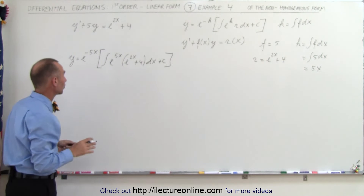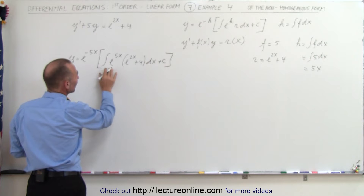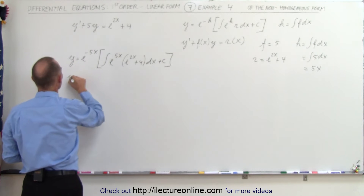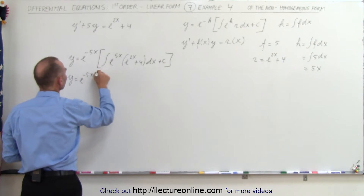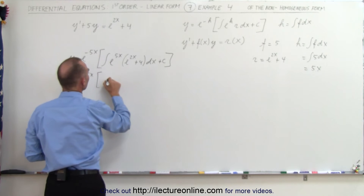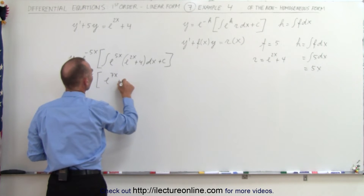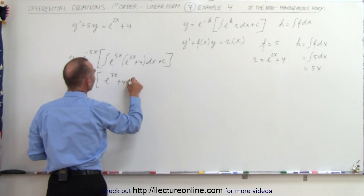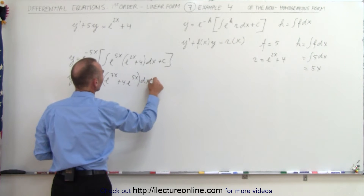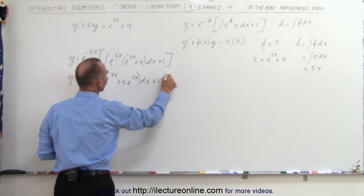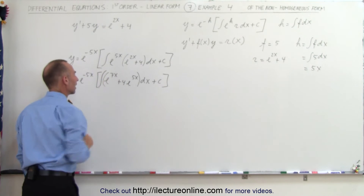Now let's simplify this expression. Before we integrate, let's multiply this out. So we have y is equal to e to the minus 5x, times the quantity — that would be e to the 7x plus 4 times e to the 5x — times dx, plus a constant of integration. And don't forget the integral sign.